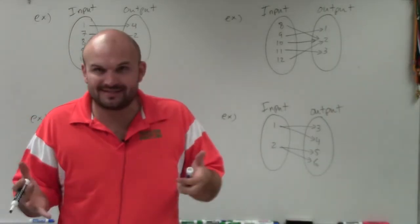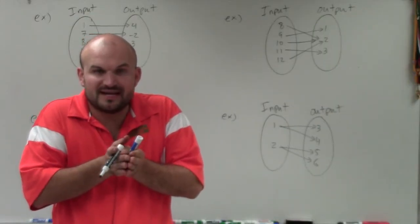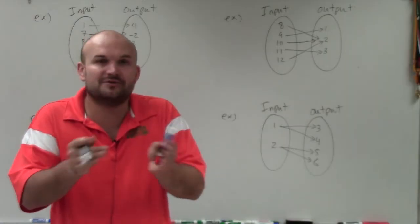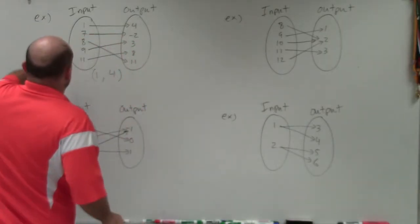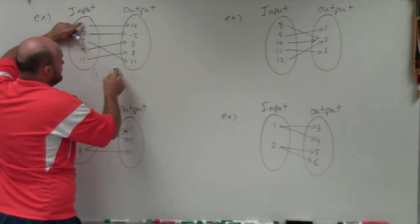The trick to this one is if any of your inputs go to different outputs, then you can say they're not uniquely mapping. For instance, if 1 is uniquely going to 4, 1 does not go to any other output.